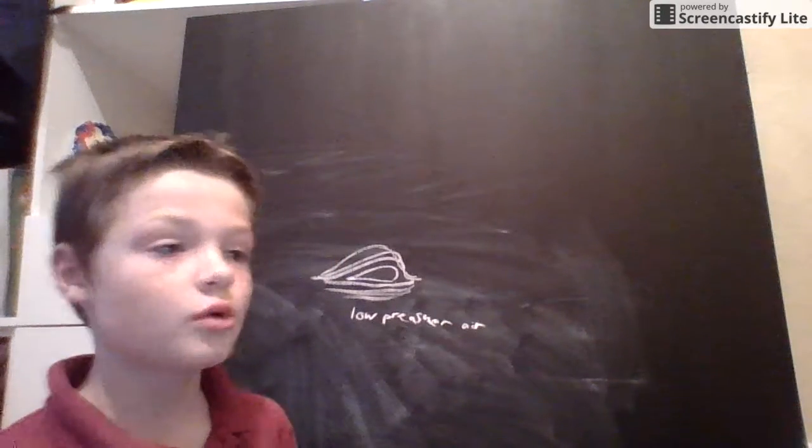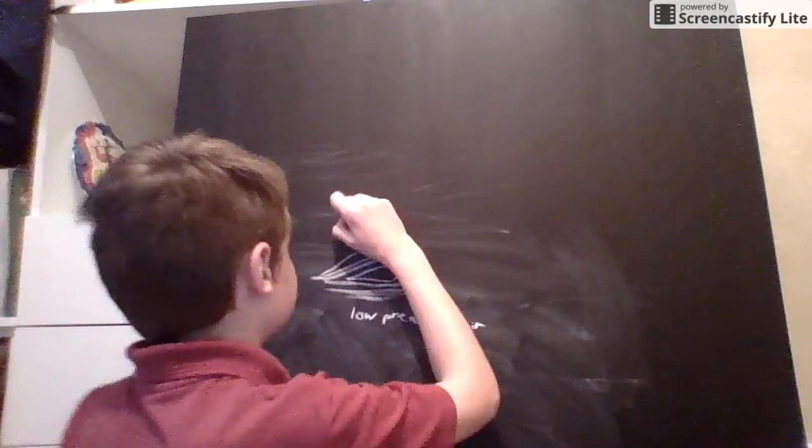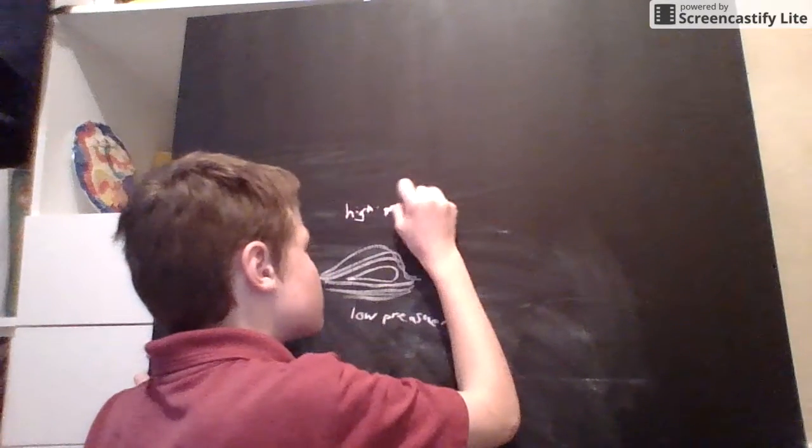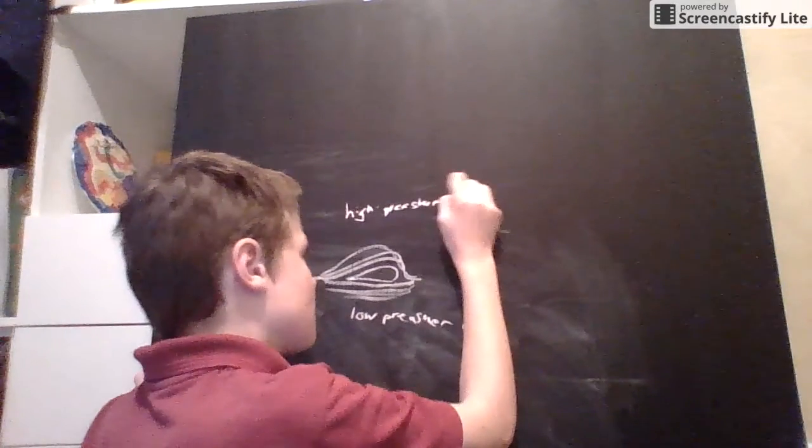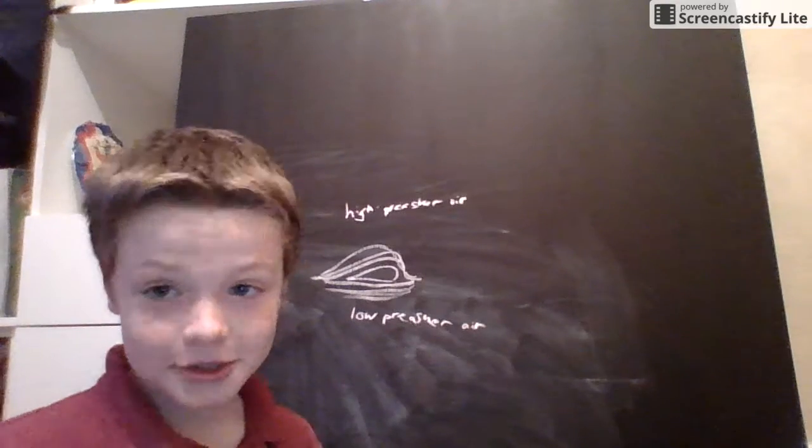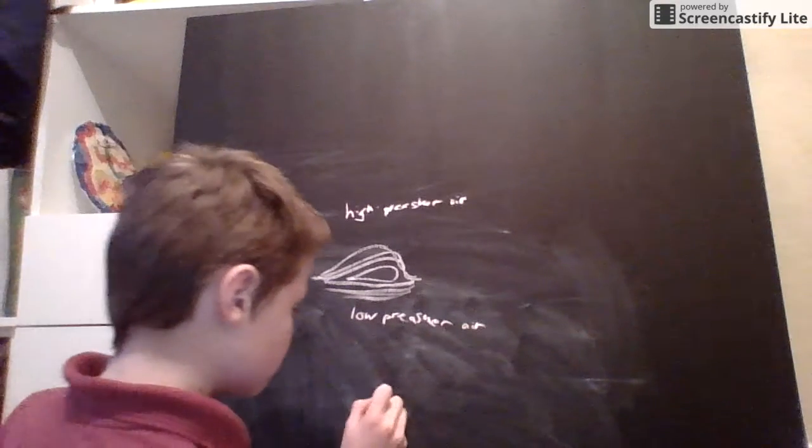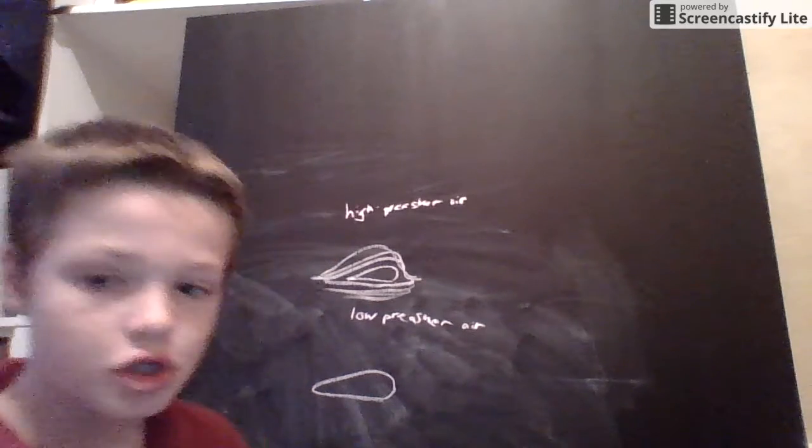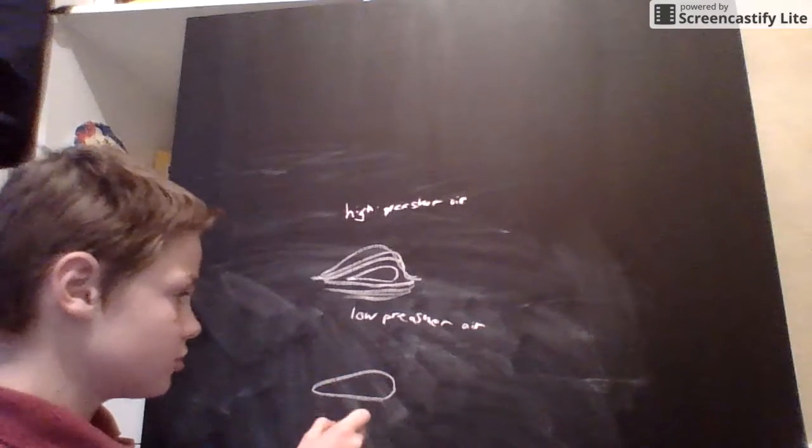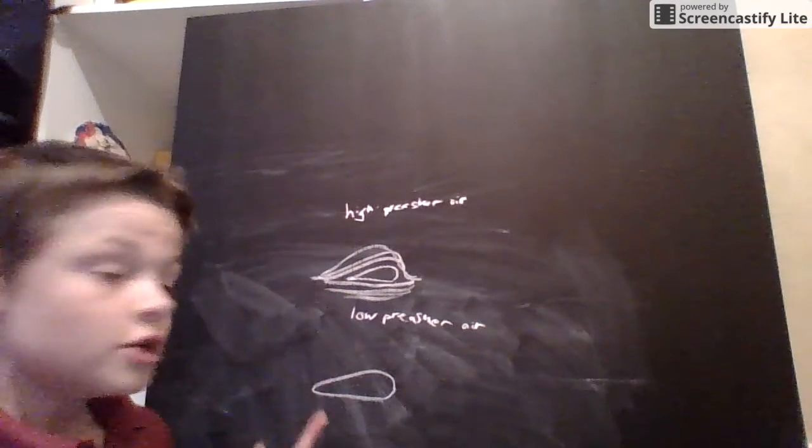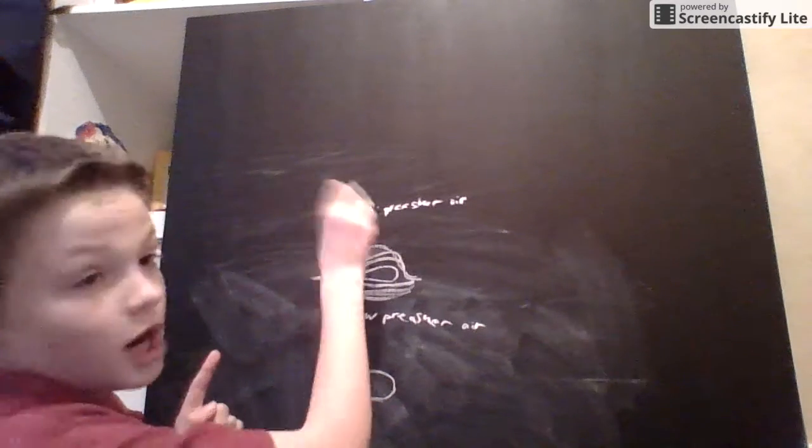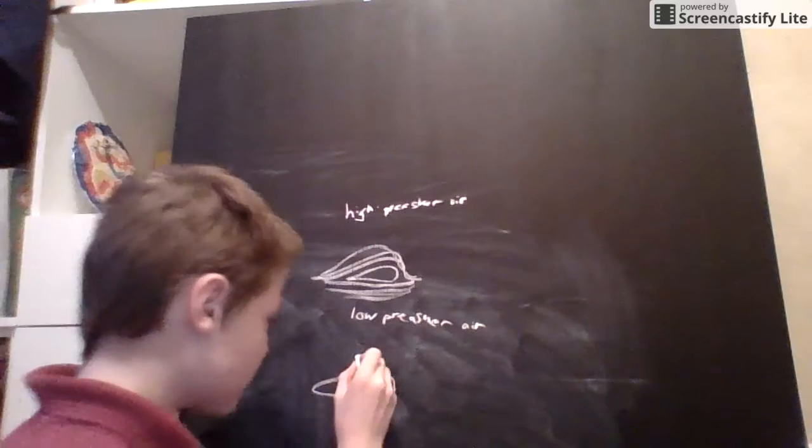And when it goes over the top, it's called high pressure air. Okay, so let's have a wee look at why it flies. So when the air goes on the top and the air goes on the bottom, low pressure, high pressure, right? So the low pressure pushes it up because that is high pressure. So that provides lift.